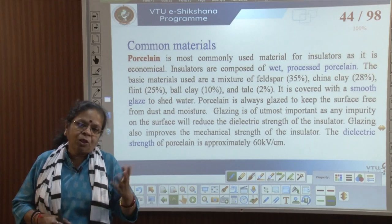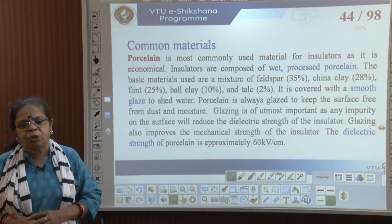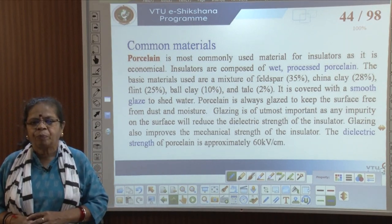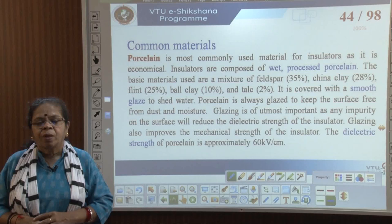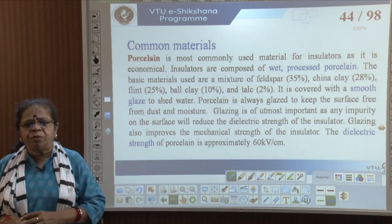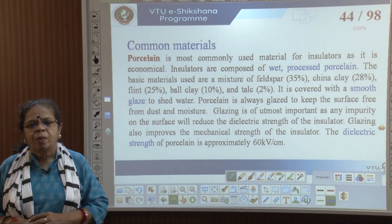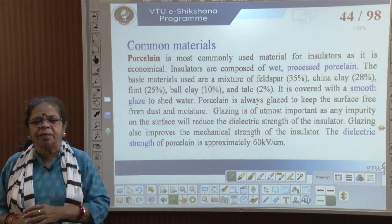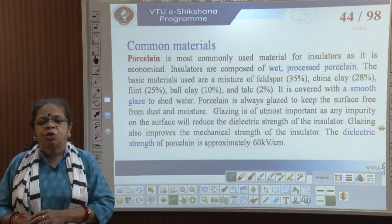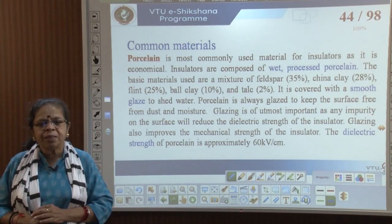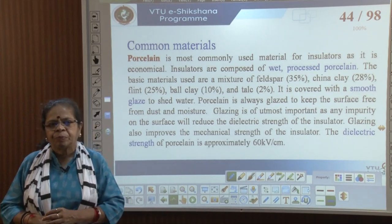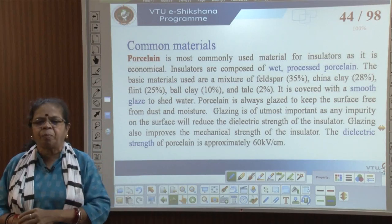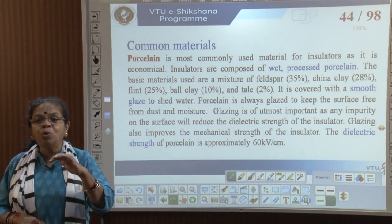The most common material used for insulators is porcelain — it is economical. Insulators are made from wet-processed porcelain; the basic materials used are feldspar, china clay, flint, ball clay and talc. All the insulators you generally see around are made of porcelain and are covered with a smooth glaze.